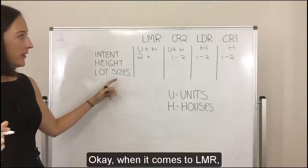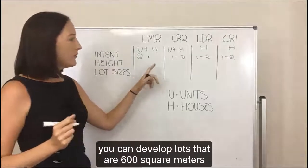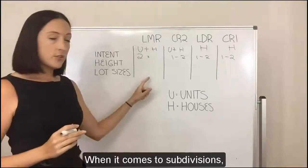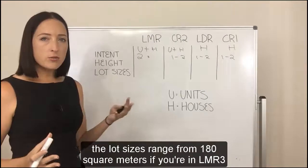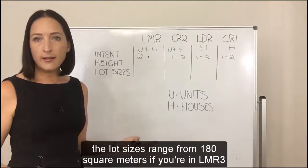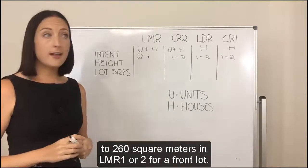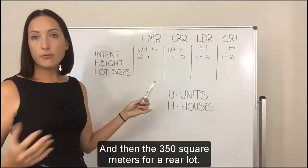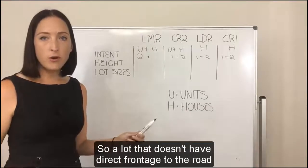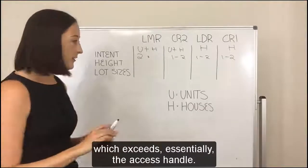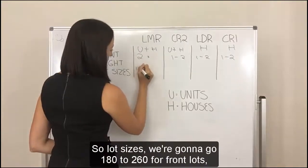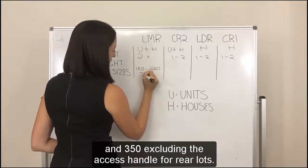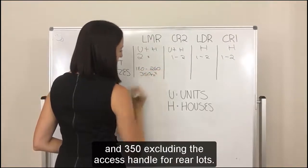When it comes to lot sizes for LMR, you can develop lots at 600 square metres for the purpose of units and townhouses. When it comes to subdivisions, lot sizes range from 180 square metres in LMR 3 to 260 square metres in LMR 1 or 2 for a front lot, and 350 square metres for a rear lot — that is, a lot that doesn't have direct frontage to the road, excluding the access handle.